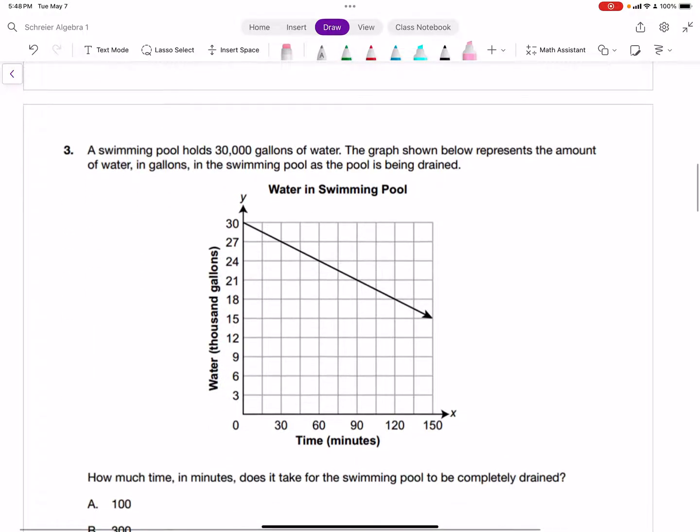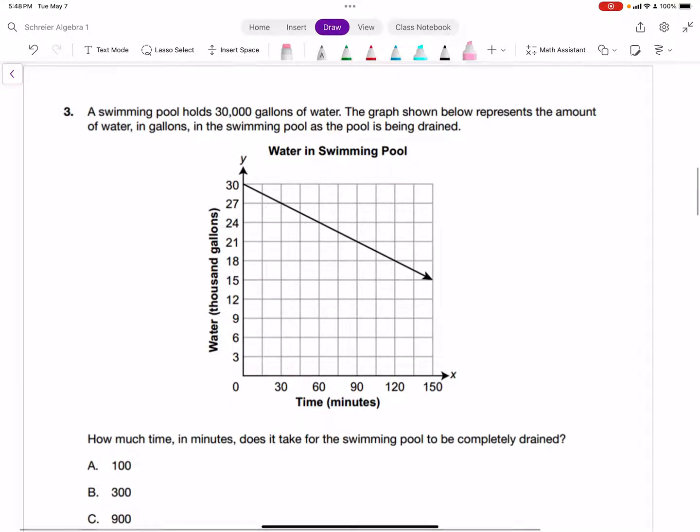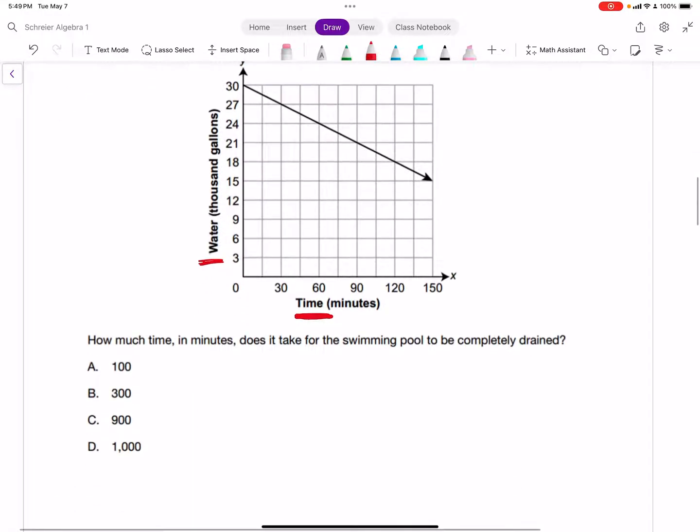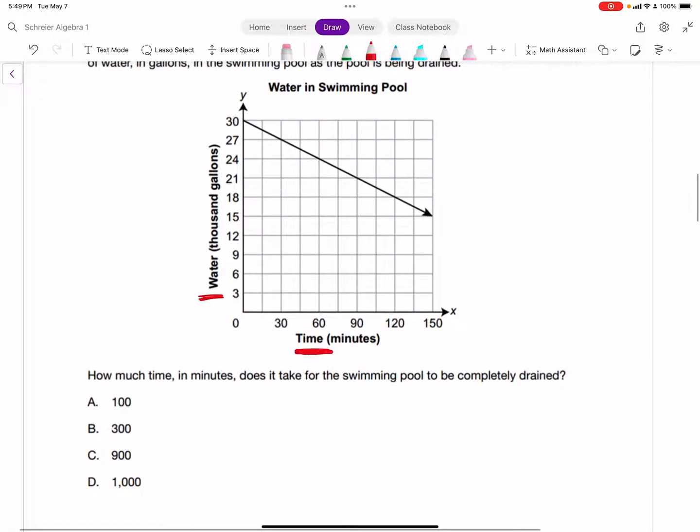Moving on. We have a swimming pool that's going to hold 30,000 gallons of water. The graph below represents the amount of water in gallons in the swimming pool as the swimming pool is being drained. We can see that the x-axis is represented by time in terms of minutes, and the y-axis is being represented by the water in thousands of gallons. And then we have this graph.